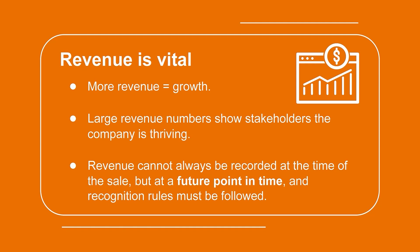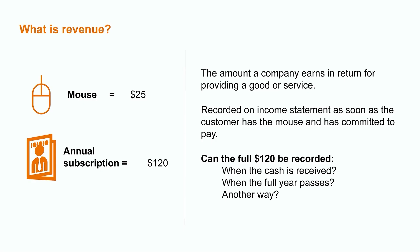Before we get into the criteria, let's do a quick refresher on what is revenue. There are many different ways that a company can earn revenue. However, in basic terms, revenue is the amount earned when a company provides a good or service. In some cases, it's easy to determine when we can recognize revenue. For example, if I sell you my computer mouse for $25, as soon as I give you the mouse and you commit to paying me, I can record the revenue at the time of sale in my income statement.